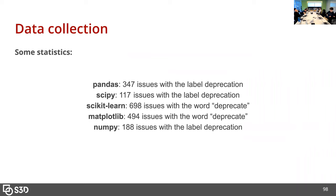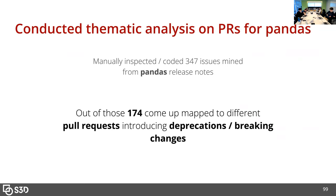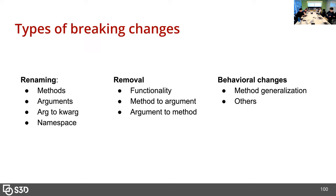The five libraries were pandas, scipy, scikit-learn, matplotlib, and numpy. I started with pandas, which had 347 issues labeled for deprecation in the release notes. Out of those, 174 pull requests actually introduced breaking changes. The types of changes I found were not significantly different from traditional libraries: renames of methods and arguments, positional arguments turned into non-positional, removal of functionality, methods turned into arguments, and other behavioral changes. This part turned out not to be too interesting.